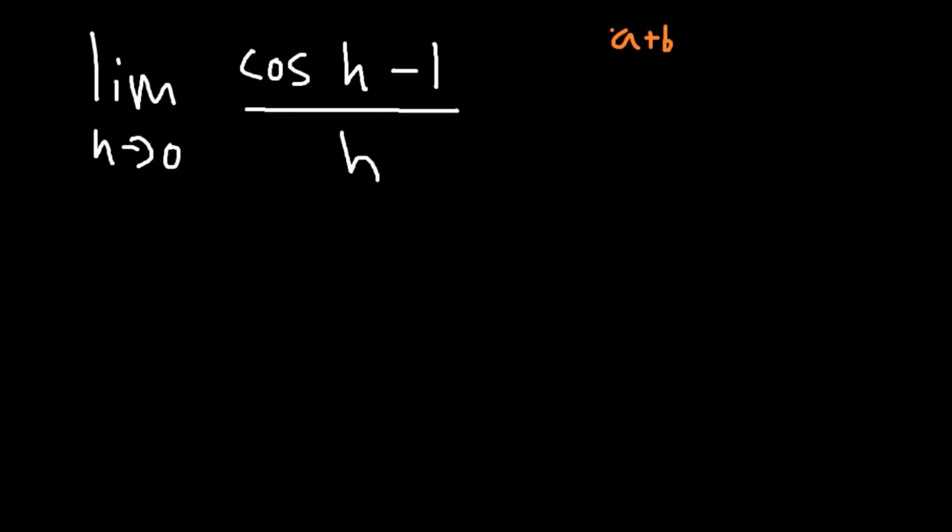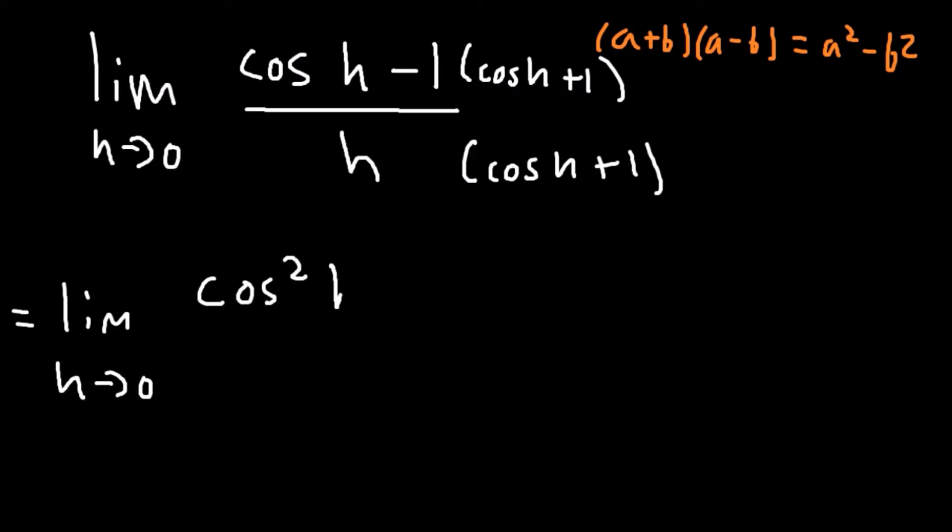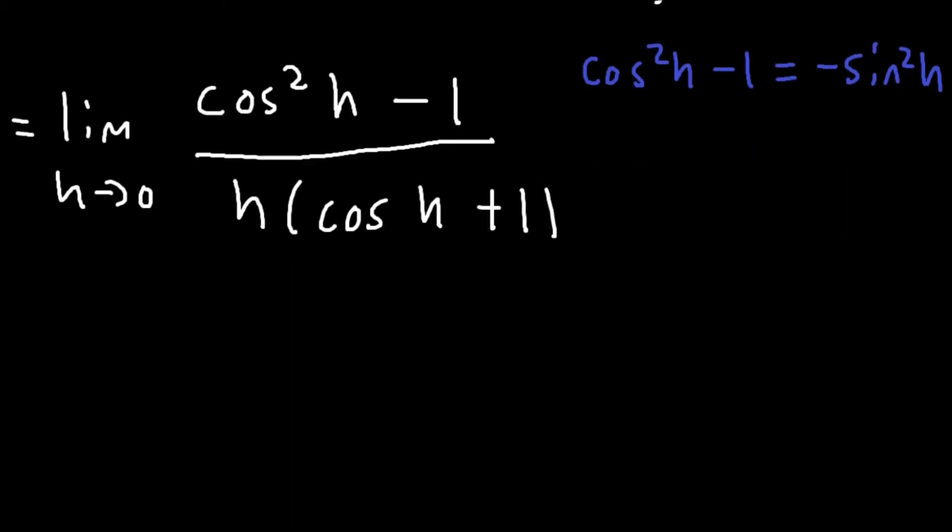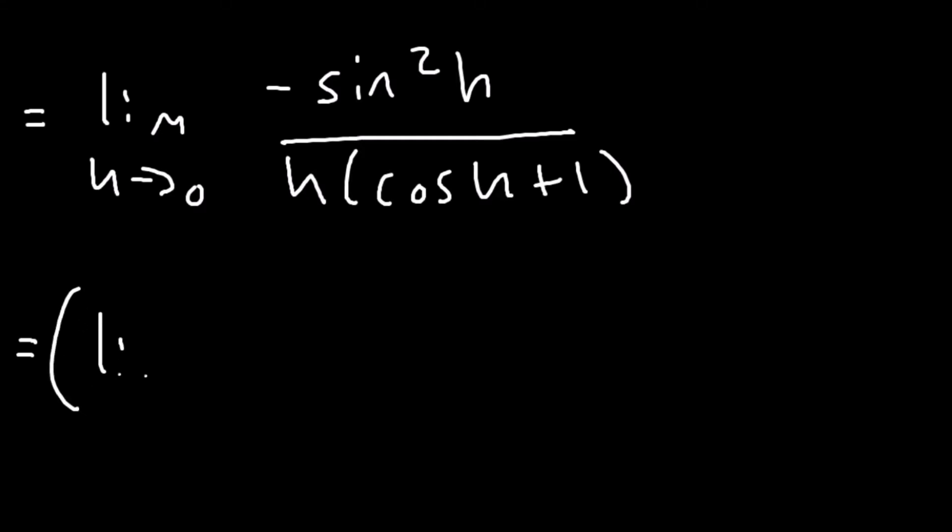Well this looks like a scenario that could apply a difference of squares to use Pythagoras' identity, so we will multiply the top and bottom by cos of h plus one. After doing this, the limit is now the limit as h approaches zero of cos squared of h minus one divided by h times cos of h plus one. On the top, that evaluates to minus sine squared of h, and then we can separate the limit into two using the limit product rule.